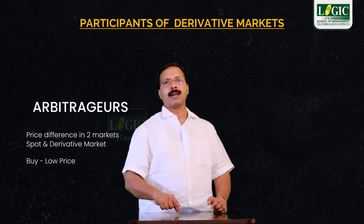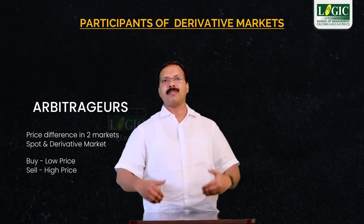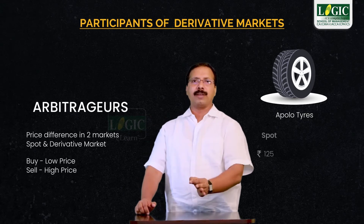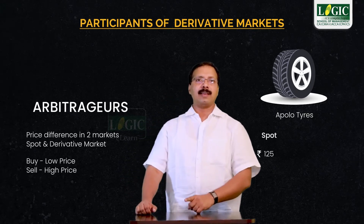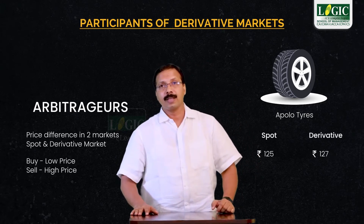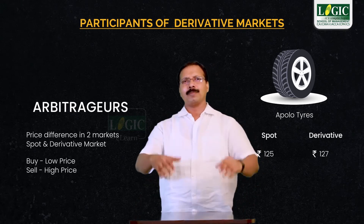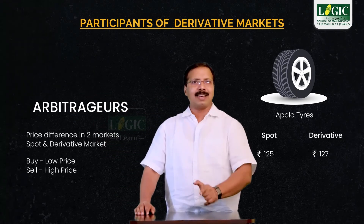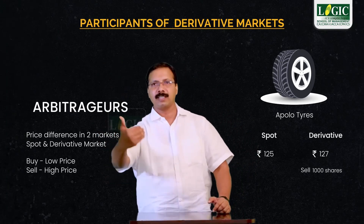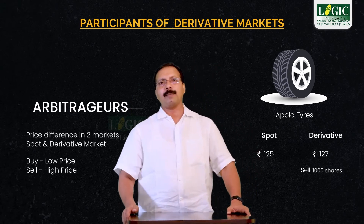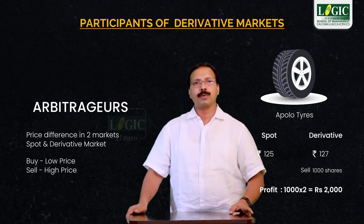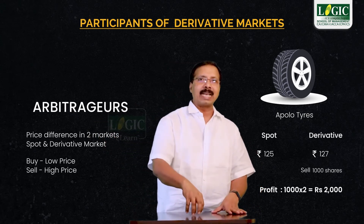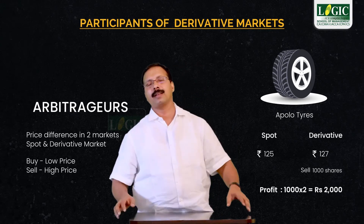They buy from the market where the price is low and sell in the market where the price is high. For example, suppose the stock of Apollo Tire is trading at 125 today in the spot market and simultaneously quoting at 127 in the futures market. An arbitrator would buy 1000 shares of Apollo at 125 in the spot market and simultaneously sell those 1000 shares at 127 in the derivative market. As a result, he will make a profit of 2 per share — a total profit of 1000 into 2, that is 2000 — without much risk, using the price difference between the spot market and the derivative market. This is arbitrage.